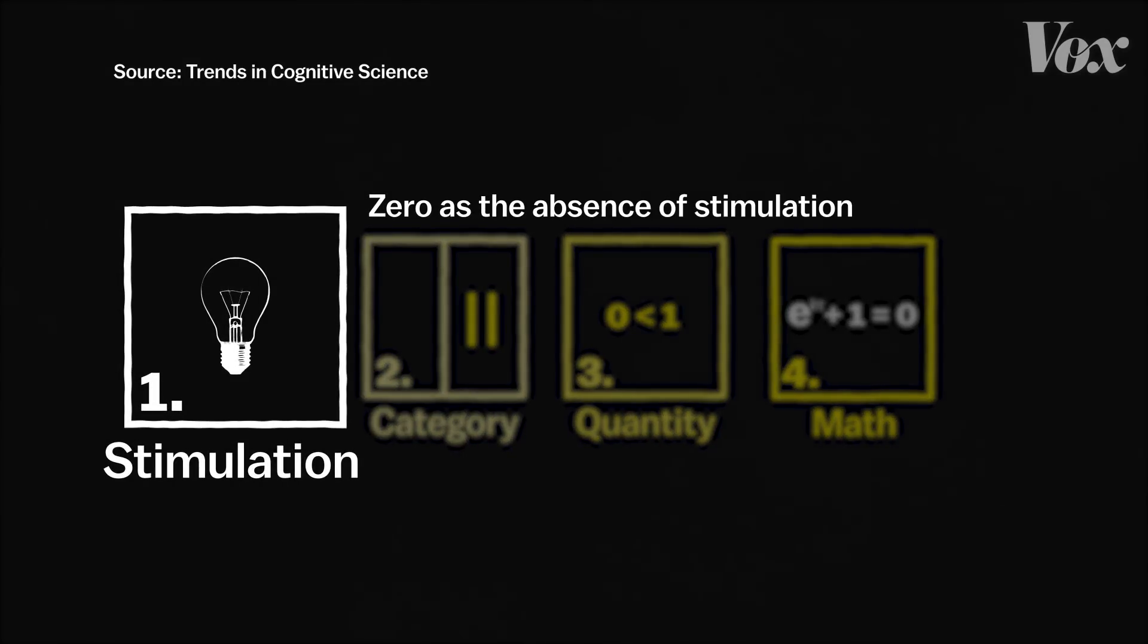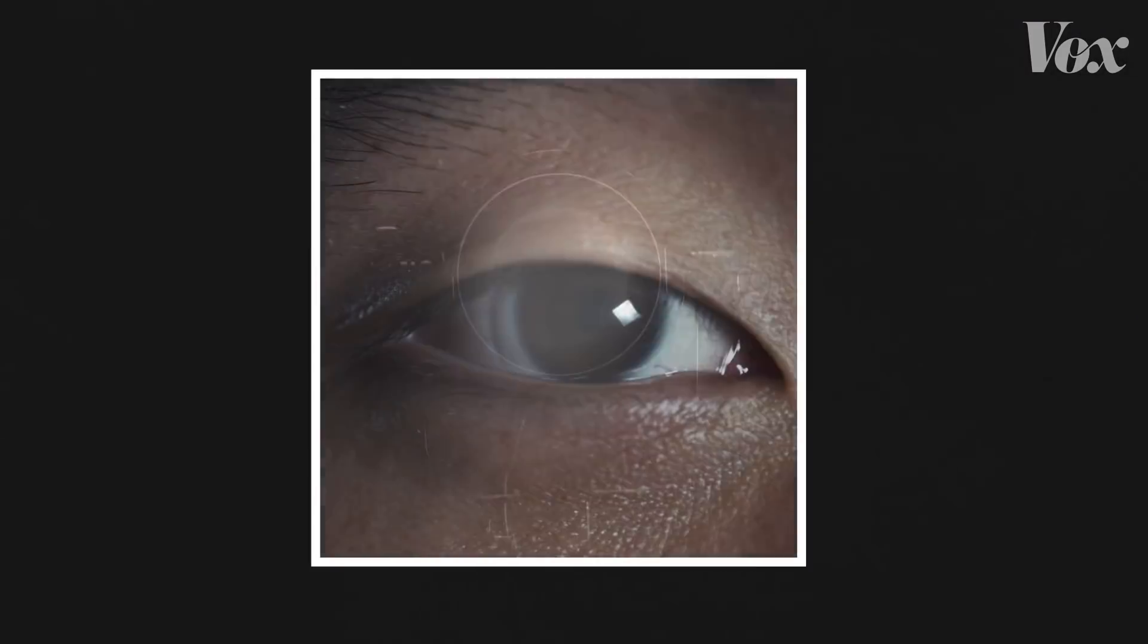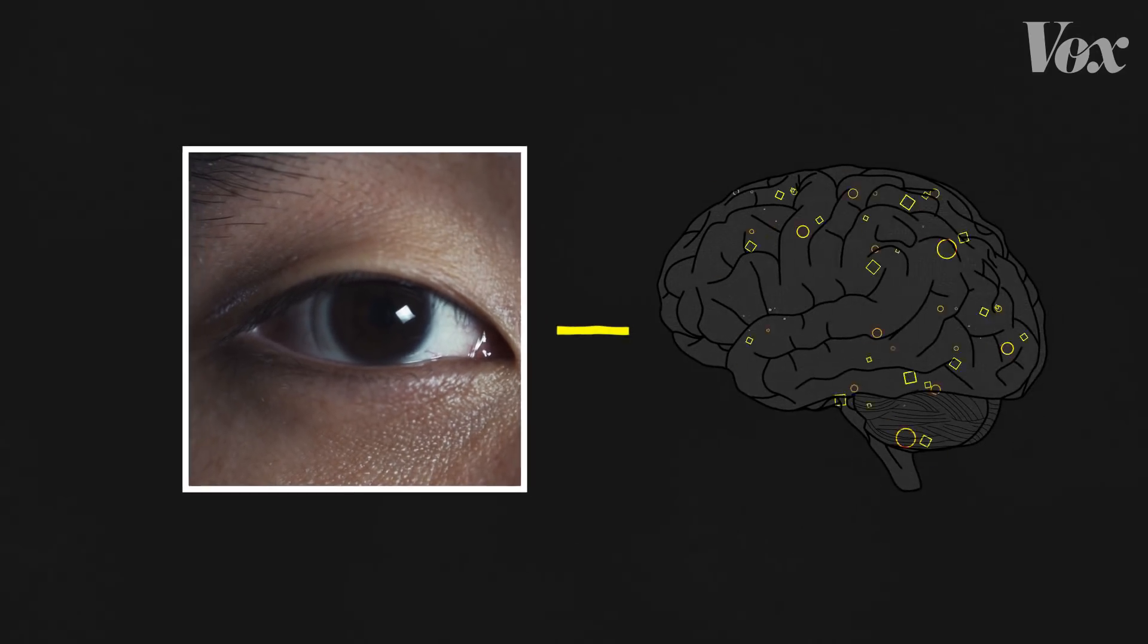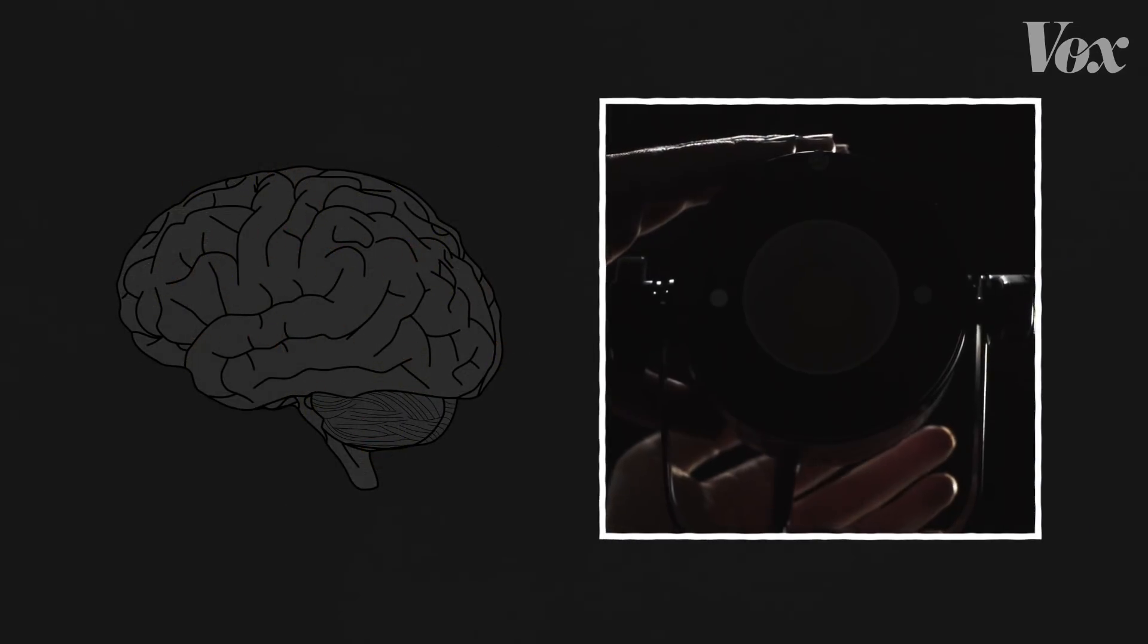The first stage is simple: the ability to notice a stimulus or the lack of one. When you turn on a light bulb, for example, your eyes recognize the presence of that light and send visual information to the brain. Without light, the neurons don't do anything.